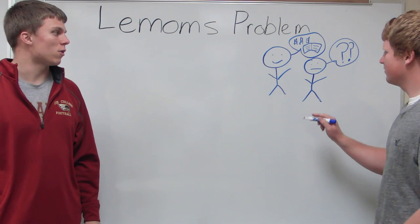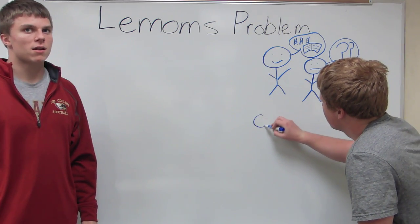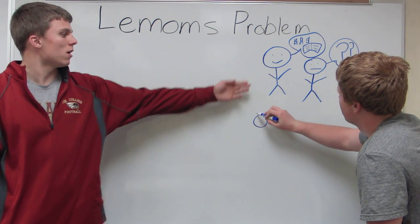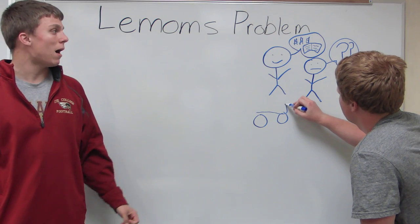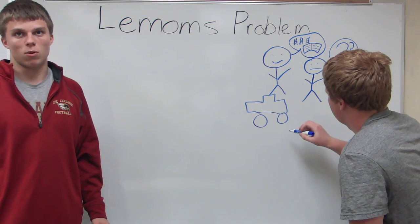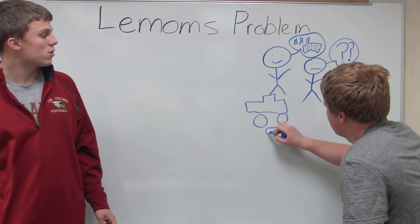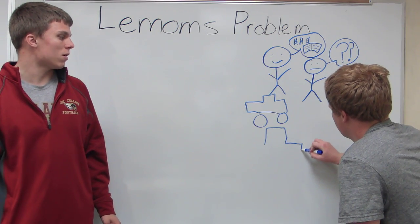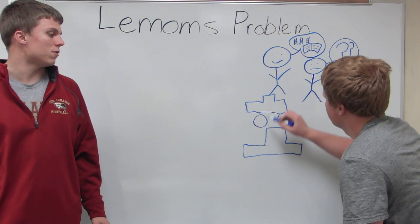George Akerlof showed this through a used car example. Let's say a person with all the information is the used car dealer, and the buyer does not have the information about which cars are good and which cars are poor. The poor cars are the lemons. Those are the ones that are likely to break down right after you buy them.